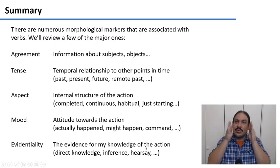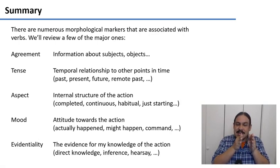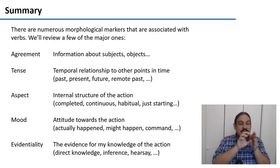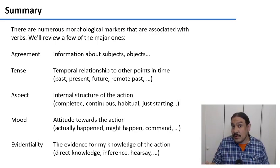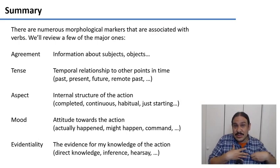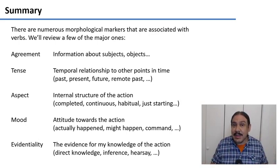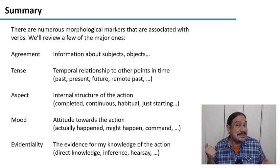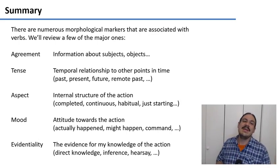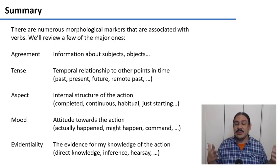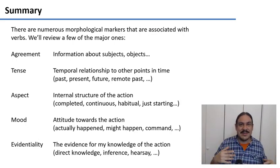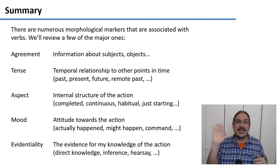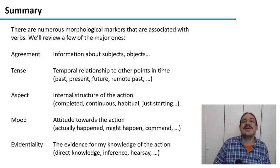Aspect is the internal temporal structure of an action — whether an action is now complete, or maybe the action is continuous, or maybe the action is habitual, like I eat today, I eat tomorrow, I eat the other day, and so on. Verbs can have mood, which is my attitude towards the action, whether something actually happened, whether something hasn't happened but might happen, or whether I'm giving you an order. And verbs can have evidentiality, which is my evidence for telling you that it's raining — maybe I felt the rain on my arm, or maybe I'm inferring it from how it sounds on the roof. So let's take a look at each of these.